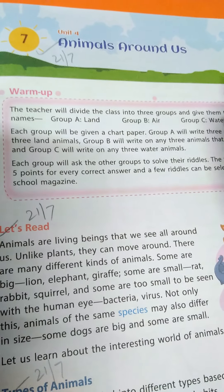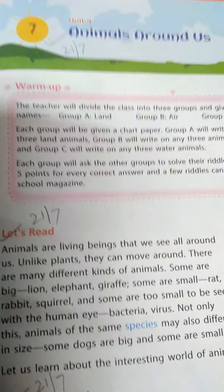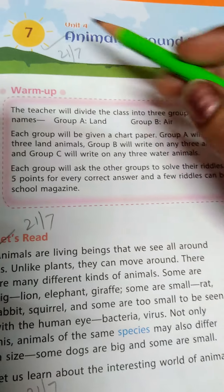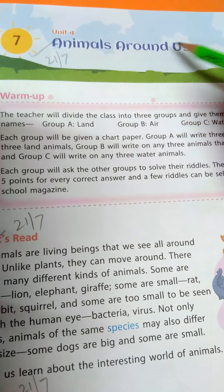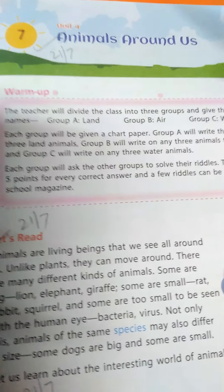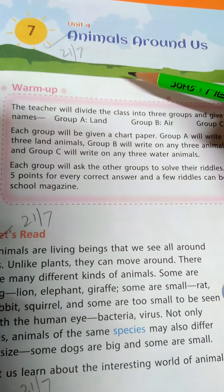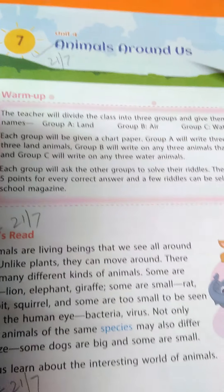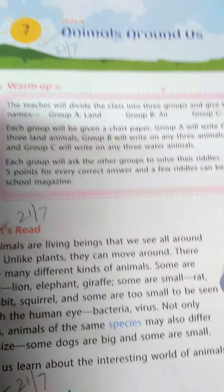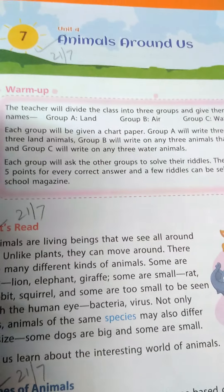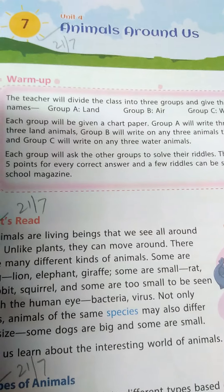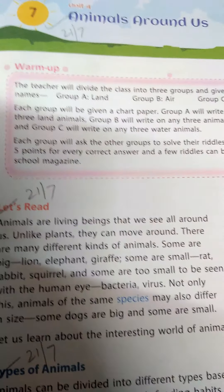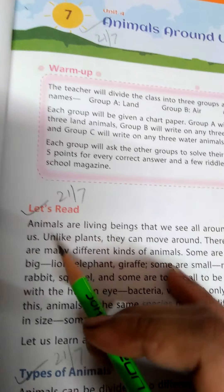Good morning dear students. Today we will start a new chapter 7 - Animals Around Us. In this chapter we are going to read about various types of animals, which categories and species they belong to. Let's start the chapter.